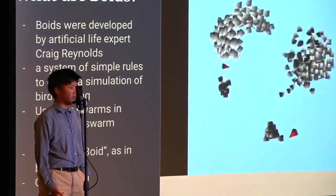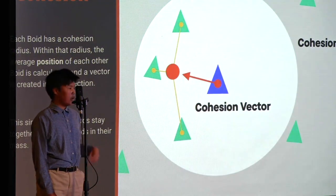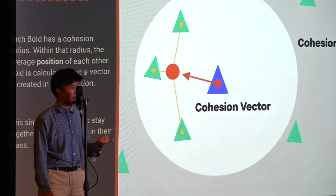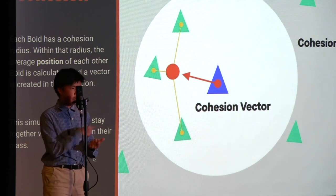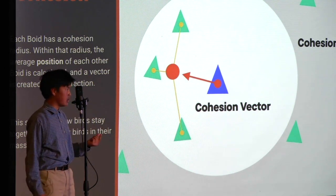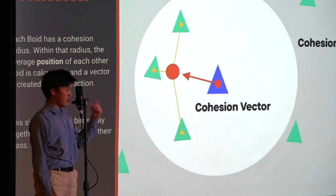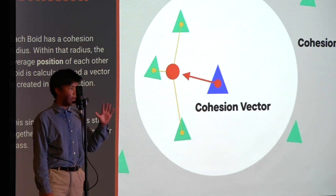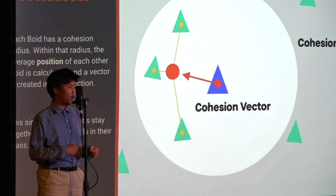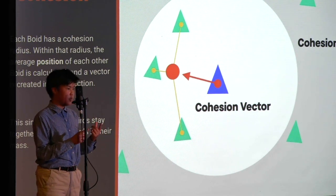So what are those three rules? Rule one is cohesion. Each boid has a radius around it, and within that radius, every other boid's average position is calculated and a vector is created in that direction. You can see in that image there's a boid in the middle and it has a radius, and every boid around it, its average position is calculated, and then a vector is created in that direction. This just moves each boid towards each other like birds do in real life, and this creates the flocking motion of birds sticking together.